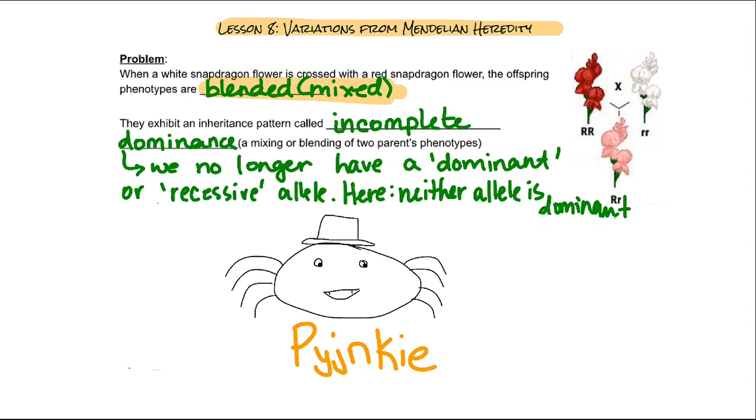they combine, and they form a new color or a new phenotype. And the example here we use is red snapdragon flowers, white snapdragon flowers combined to make a pink snapdragon flower.